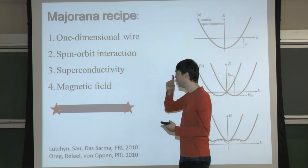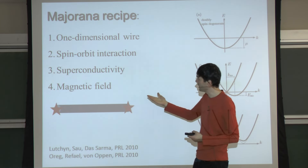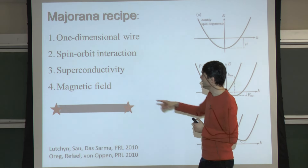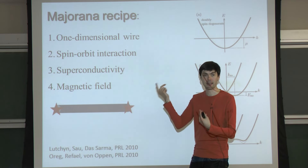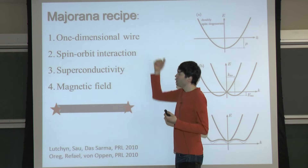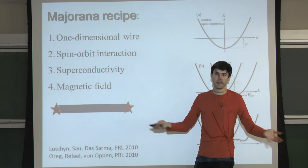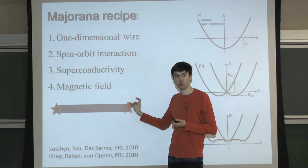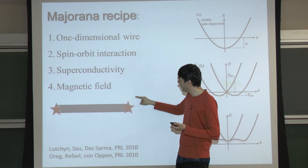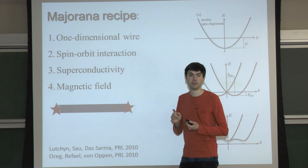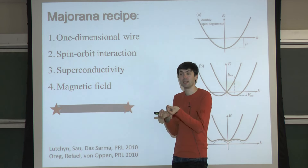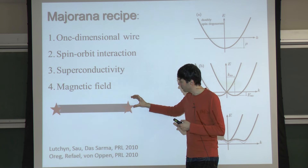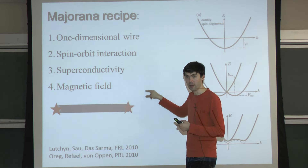There are some nuances: the magnetic field has to be perpendicular to the spin-orbit field for this to work - otherwise the two fields add together and there is no spin-mixing effect. Also, why do you need a one-dimensional wire and not just a 2DEG piece of semiconductor? Because we want a single Majorana - if there were many modes there would be a Majorana mode flowing on the edge, not a single particle.